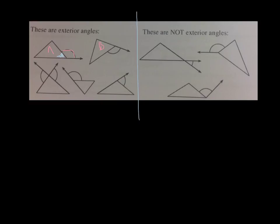Same thing here in figure B. If we extend this side of the triangle, then this angle is an exterior angle. And you can see again, it's supplementary to one of the angles inside the triangle.